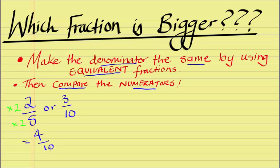Now, this here is the same as this. It's got the same denominator as 3 on 10, so we can compare it. So now if we look at it, which is bigger, 4 tenths or 3 tenths? And we know that 2 fifths is actually bigger than 3 tenths because the numerator here, 4, is bigger than the 3.